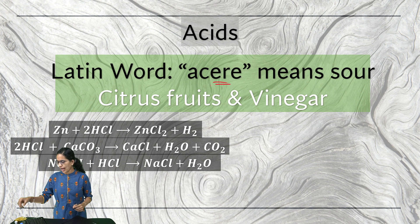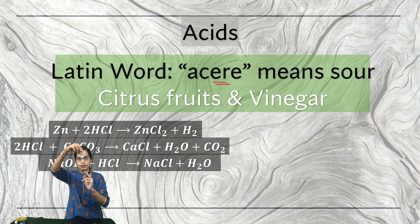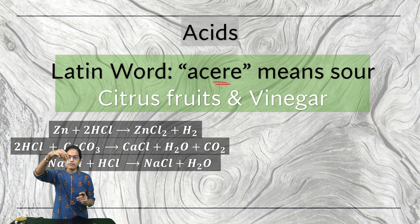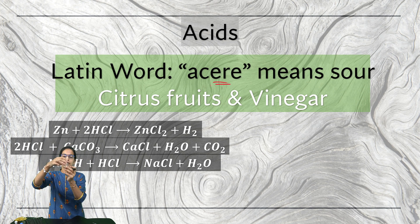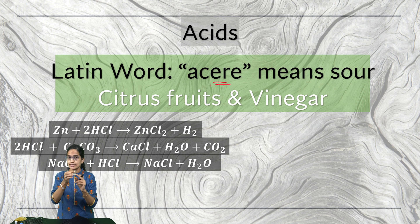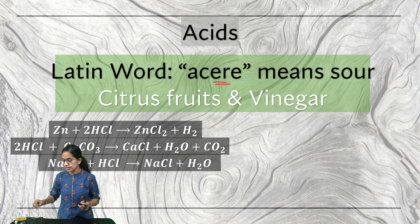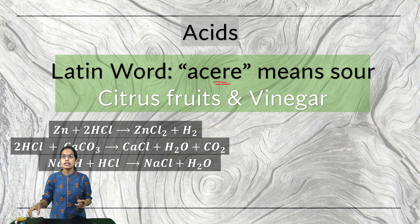For example, I take lemon juice. This is the lemon juice I have in the beaker and this lemon juice is acidic. The acid here is citric acid.